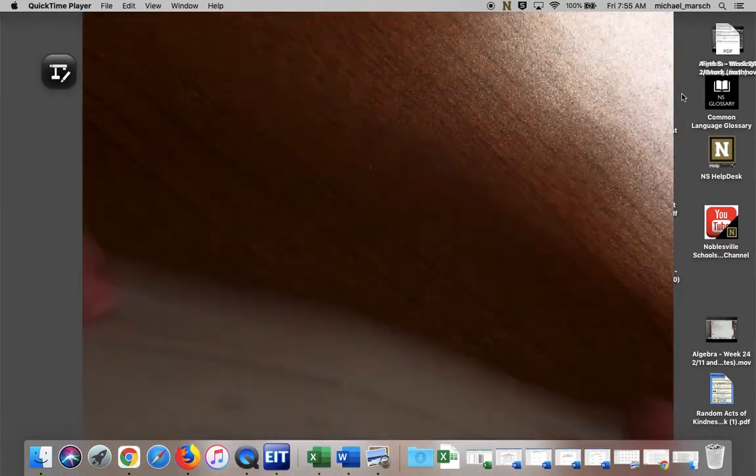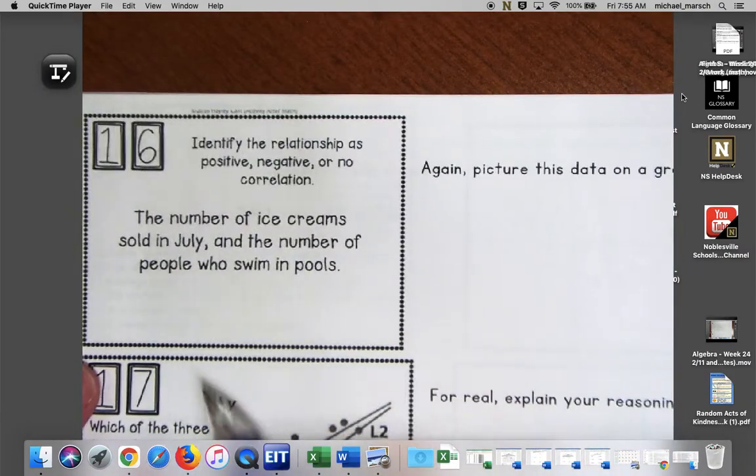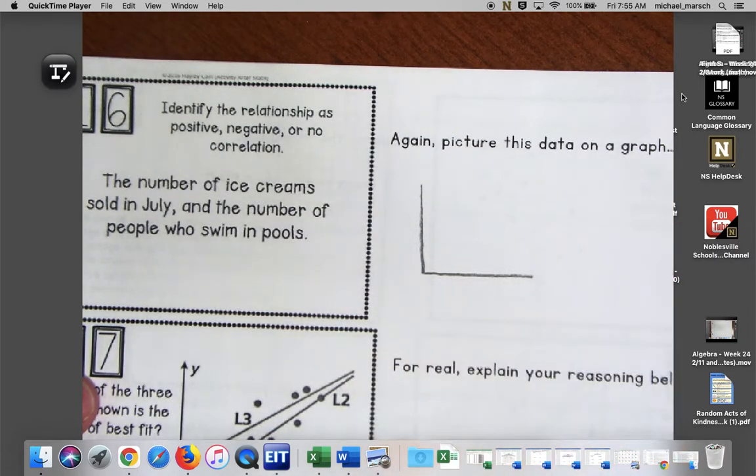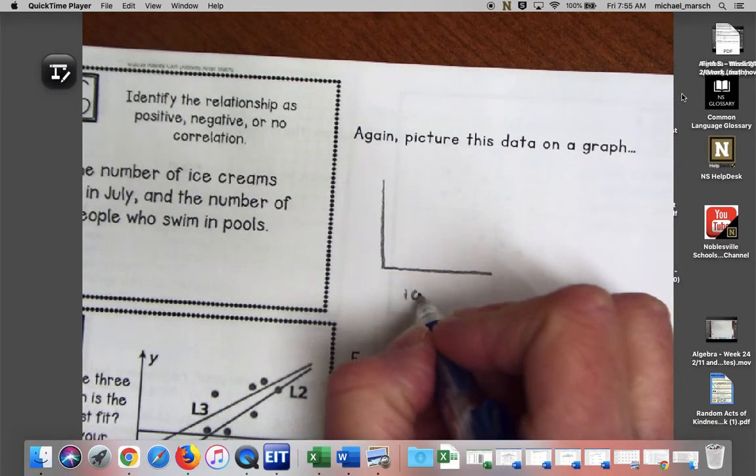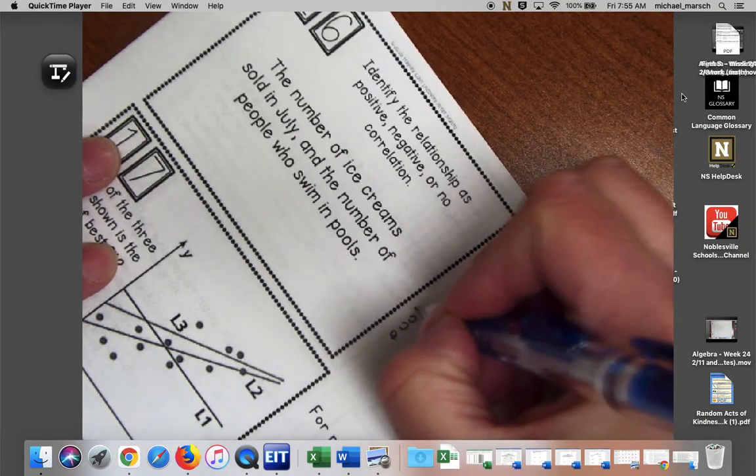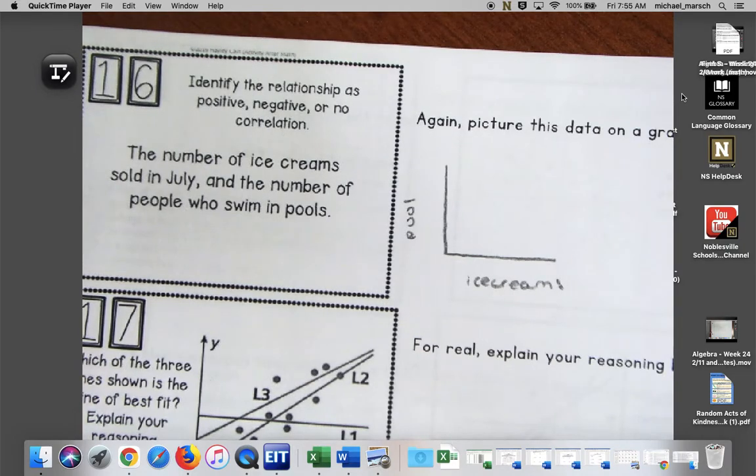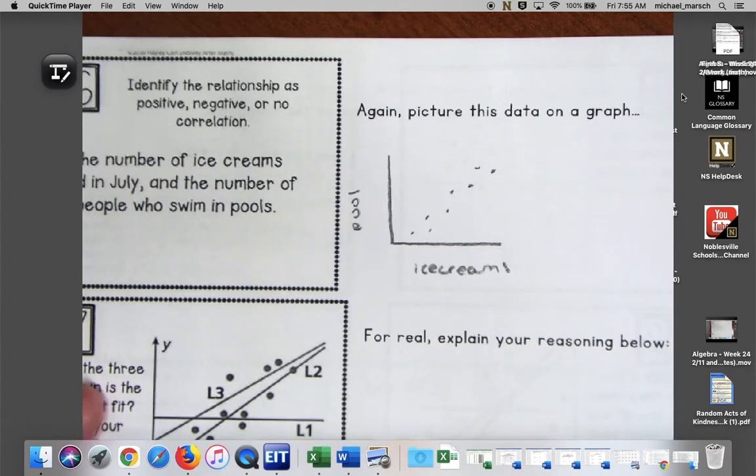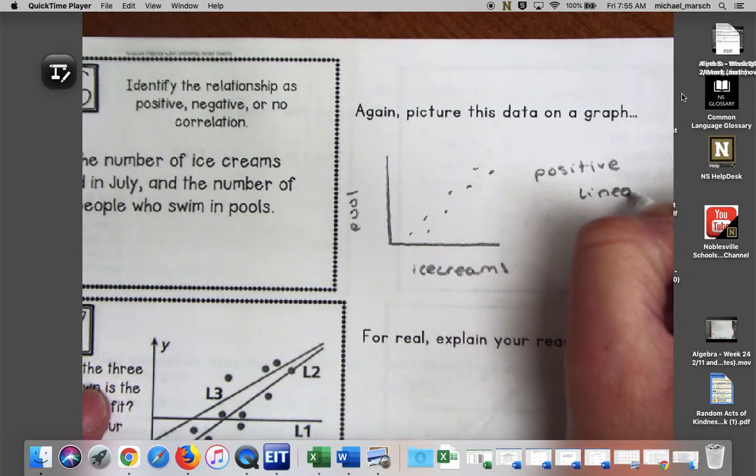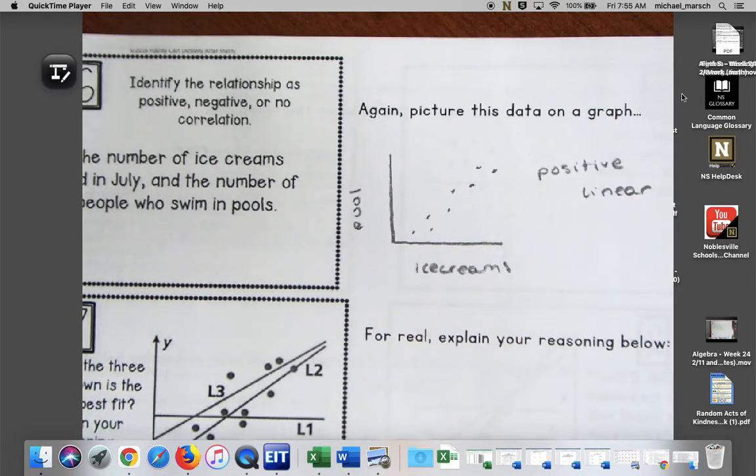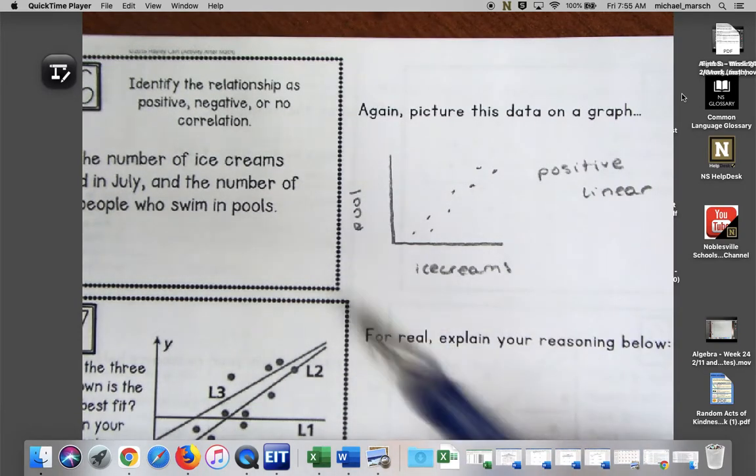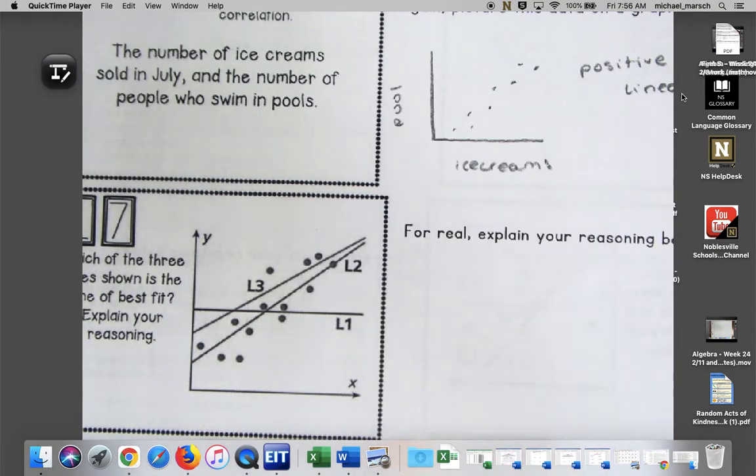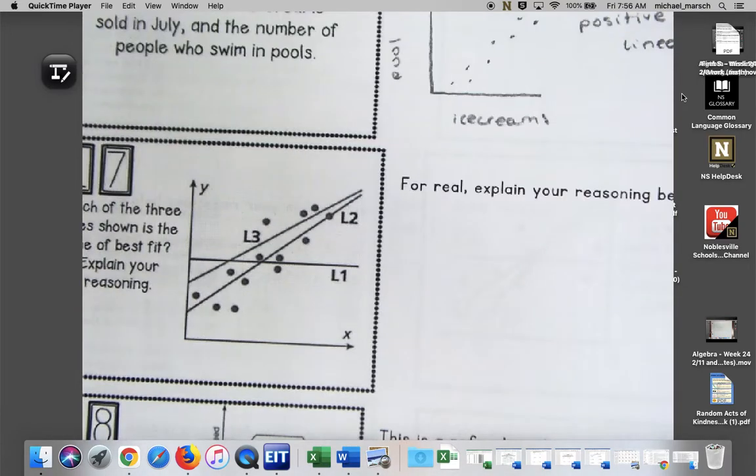On the back we have number 16, the number of ice creams sold in July and the number of people who swim in pools. This one's a little bit more abstract. Here's ice creams and here's the number of people in a pool. I think the connection they're trying to make is it's hot because it's July, so probably as you're selling more ice creams, there's more people in pools because it's hot. You would have had a positive linear. I realize some of you are probably thinking I could totally argue it differently, but it's just in general more people are eating ice cream because it's hot, as well as going in the pool because it's hot.